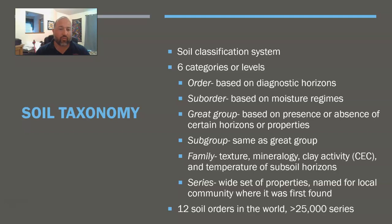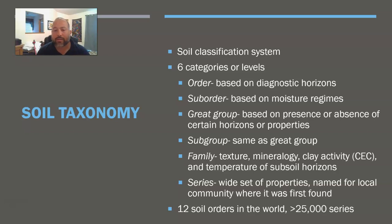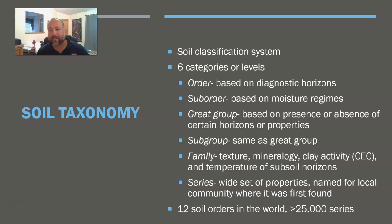It's got really strong evidence of that. Then we have suborder, which is based on the soil moisture regime. We've got great group and subgroup, which are based on the presence or absence of certain horizons or properties. Then we have family, based on texture, mineralogy, clay activity — where we're really talking about cation exchange capacity — and the soil temperature regime of subsoil horizons.